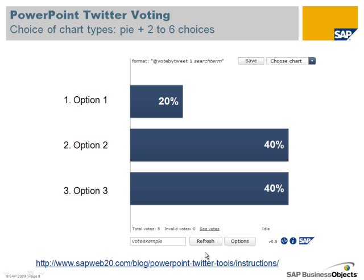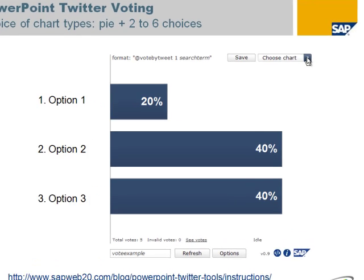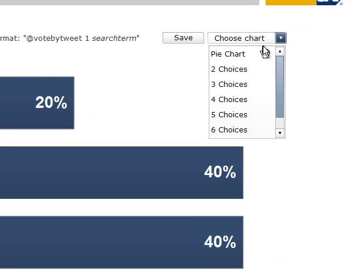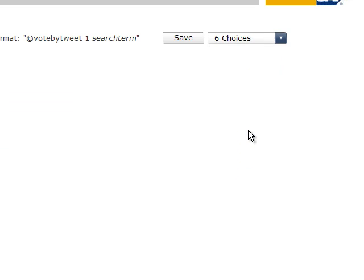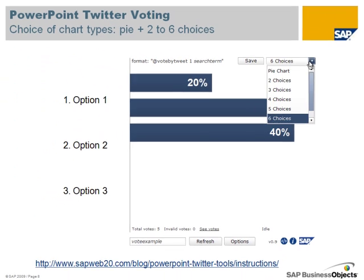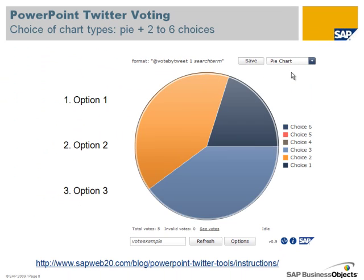You can hit refresh if you like, and there you can see it came in extremely quickly. There's a variety of different formats — you can have up to six different choices, or display it as a pie chart.